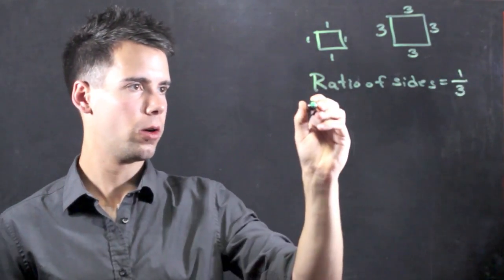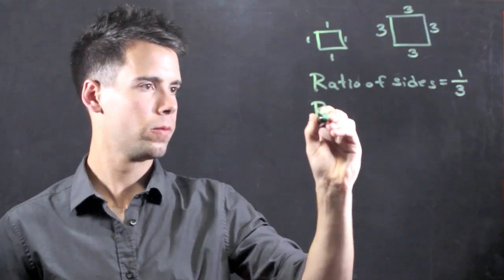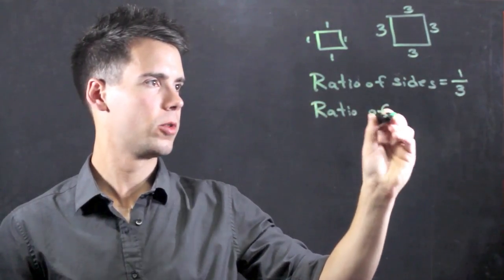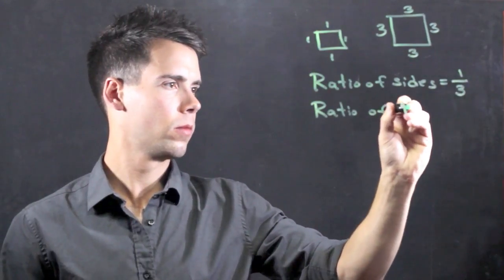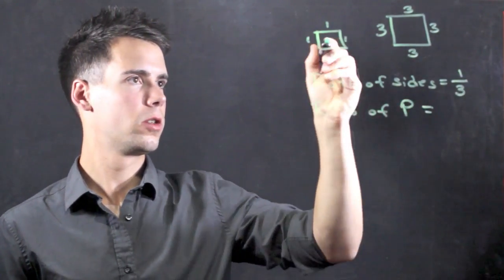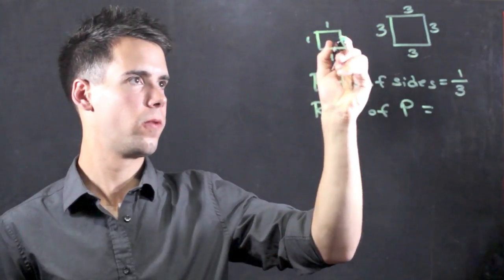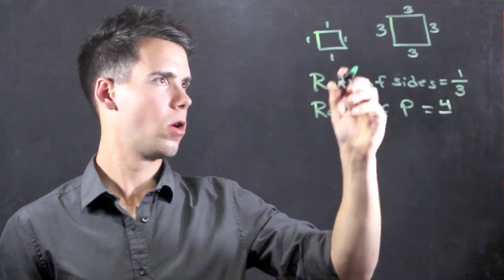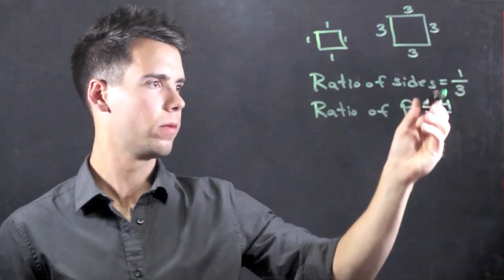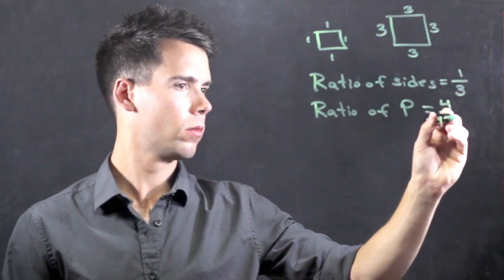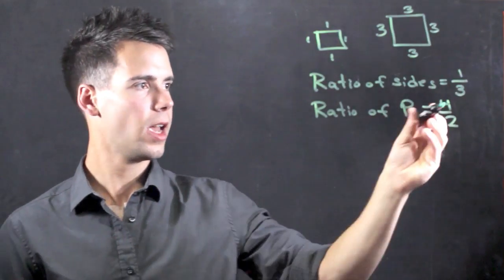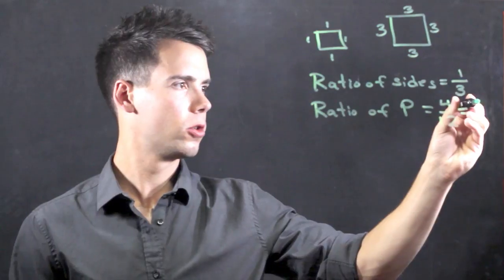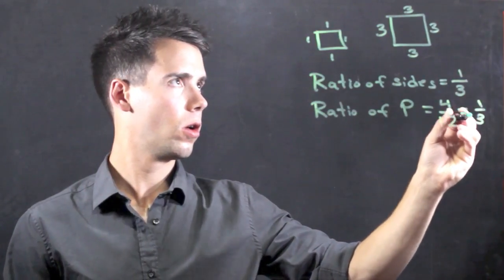Now if we look at the ratio of the perimeters, I'm just going to call it big P, it's equal to 1, 2, 3, 4 over 3, 6, 9, 12. So this actually just reduces if you divide the top and the bottom by 4 to 1 over 3.